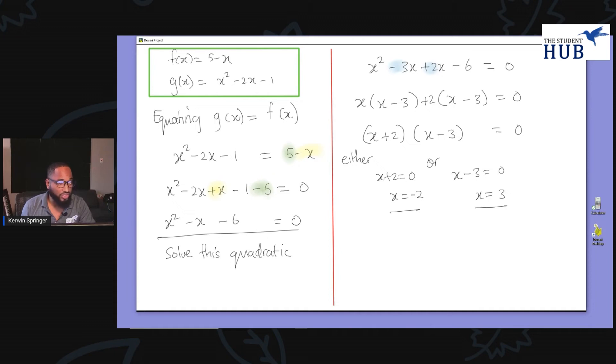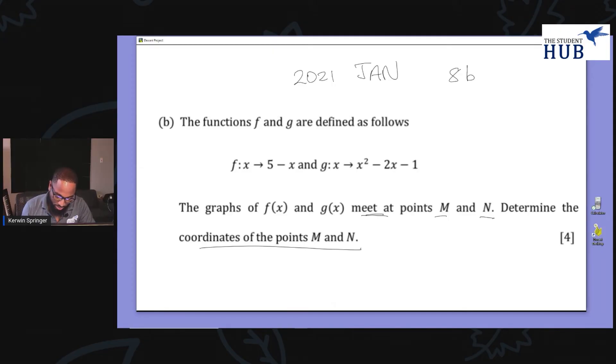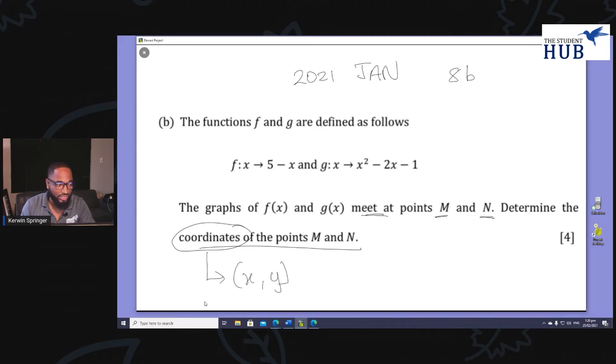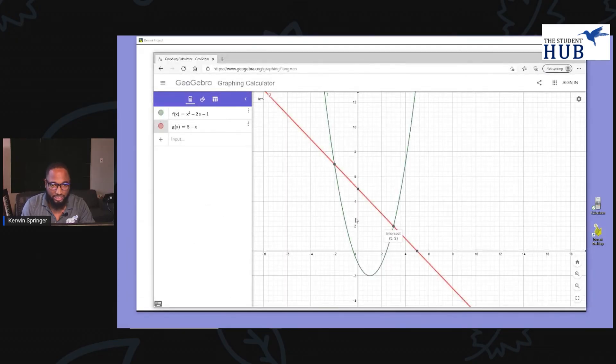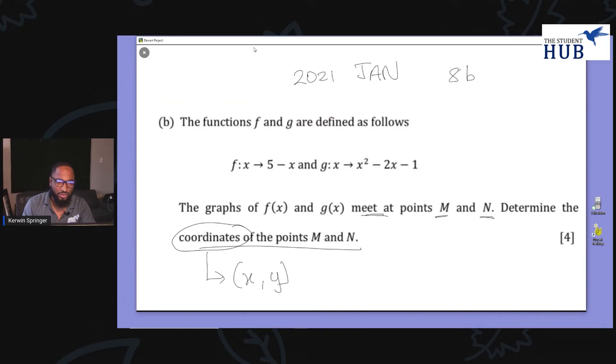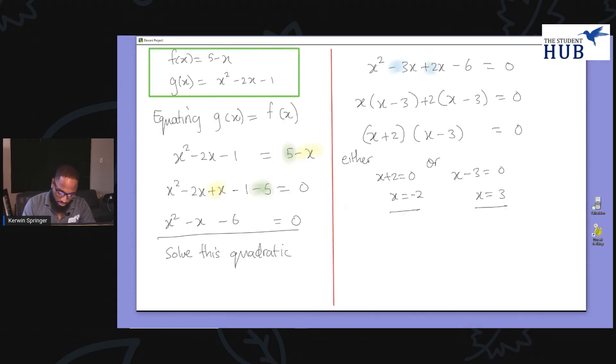Are we finished? Actually not. Let's look back and see exactly what they want: meet at points M and N, determine the coordinates. And coordinates mean the x value and the y value. And if I just bring up the graph, you'd realize that this is a quadratic graph and a line cutting through the quadratic, it's actually hitting at two points. Negative 2, we got that x. And 3, we got that x. But we need to find the 2 here that corresponds to that and the 7 that corresponds to that as well. So we're nearly there.